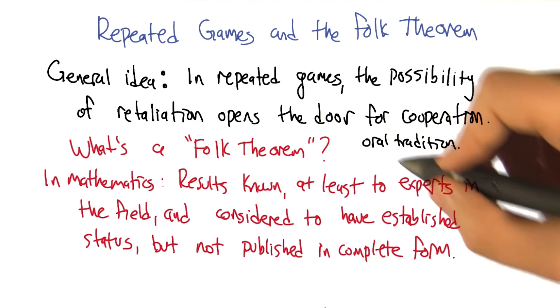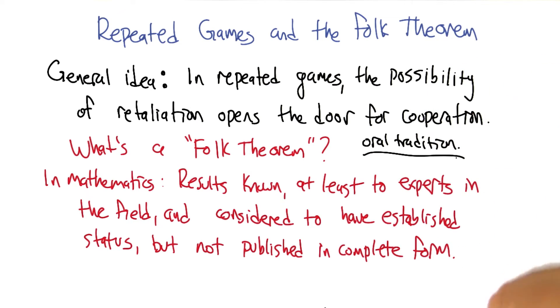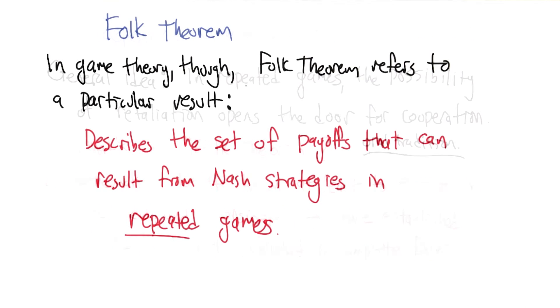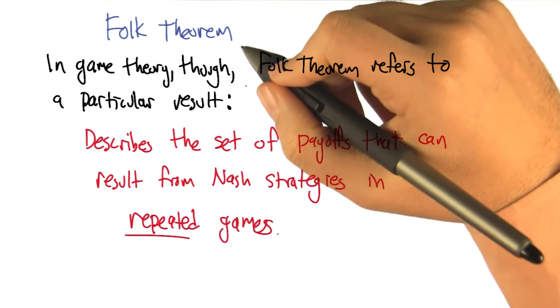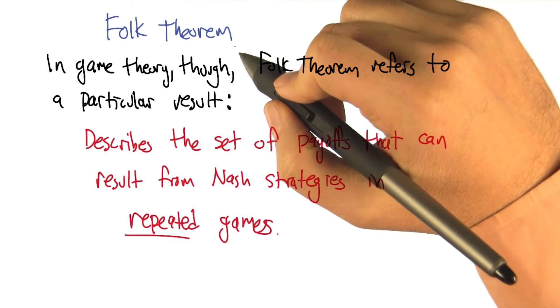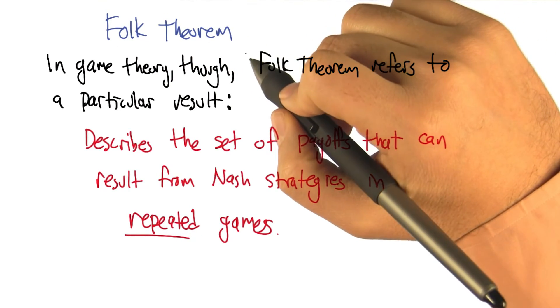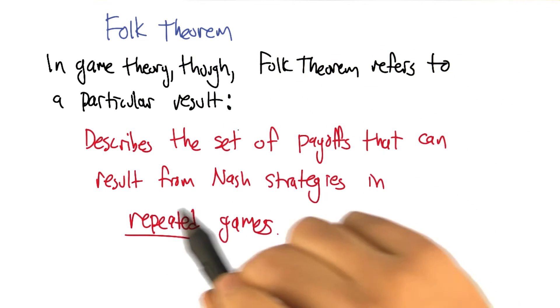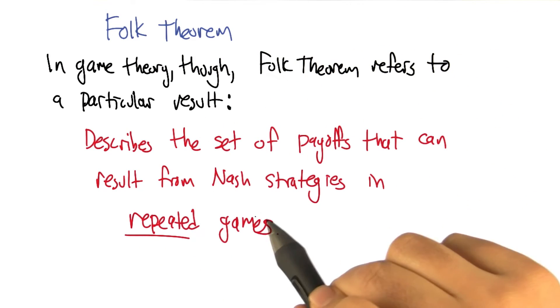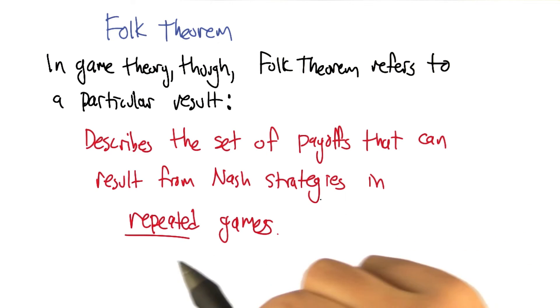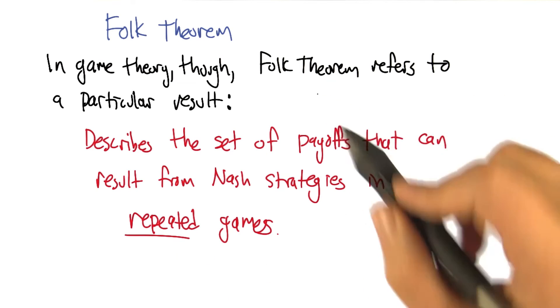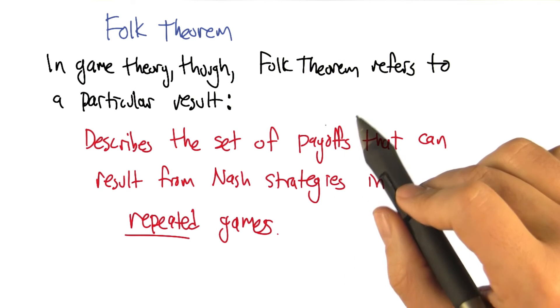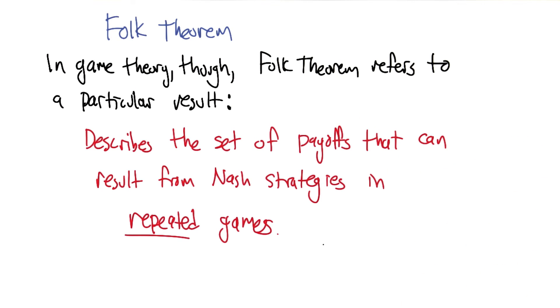So that's what a folk theorem is in mathematics. However, in game theory it means something different. It is referring to a folk theorem, but it's also referring to a particular folk theorem. So the folk theorem in game theory refers to a particular result that describes the set of payoffs that can result from Nash strategies in repeated games. So it's a funny thing. It's a folk theorem, but it's also the folk theorem.